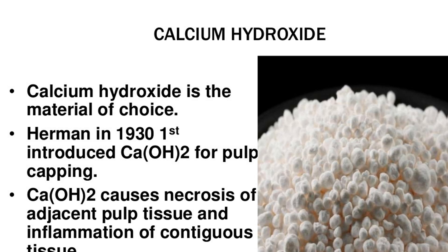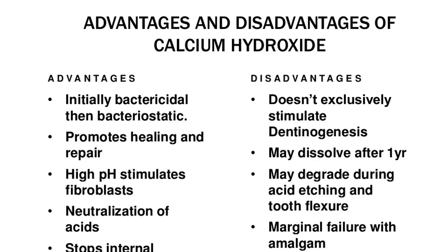Calcium hydroxide is the material of choice. Herman in 1931 introduced calcium hydroxide for pulp capping. Calcium hydroxide causes necrosis of adjacent pulp tissue and inflammation of contiguous tissue. Dentin bridge formation occurs at the junction of necrotic and inflamed tissue.